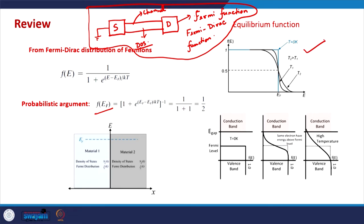This is the plot of the Fermi function versus energy as a function of temperature for various temperatures. At T equal to 0, the Fermi function is 1 below the Fermi level E_F. This means that all energy levels up to E_F are occupied at 0 Kelvin. As the temperature is increased, some energy levels very close to the Fermi level are no longer fully occupied.